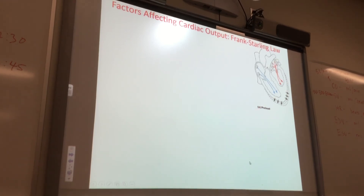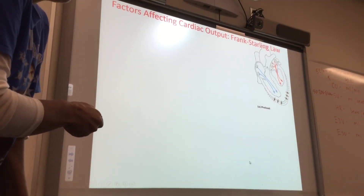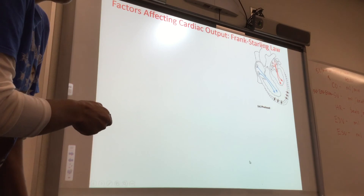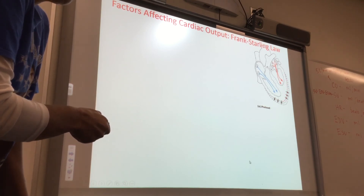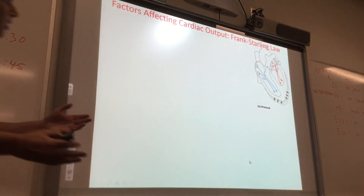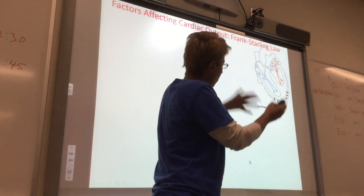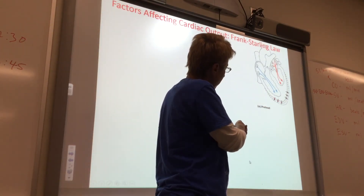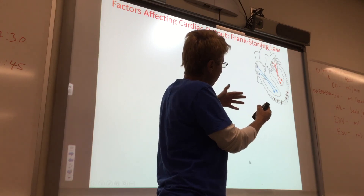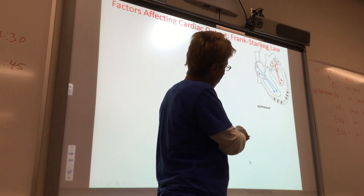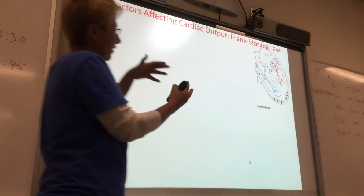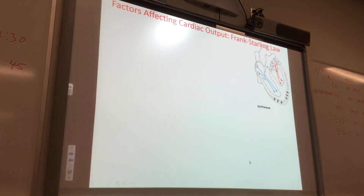This is a cartoon of preload. The dark solid line here is the heart as it begins to fill with blood. As more and more blood comes in, the ventricular volume gets bigger, and those cells inside the wall of the ventricle are getting stretched — their sarcomeres are getting stretched.